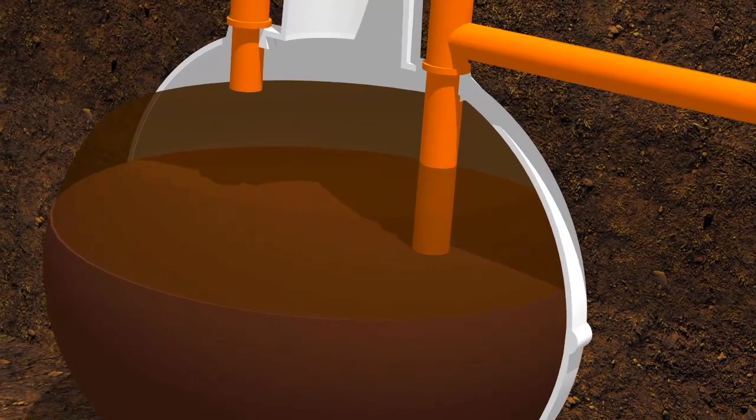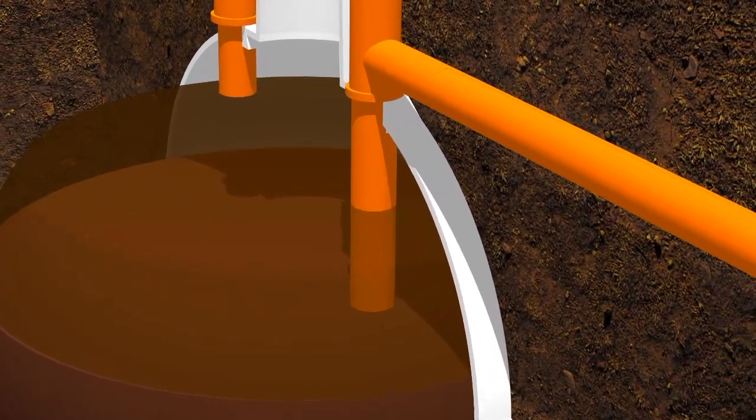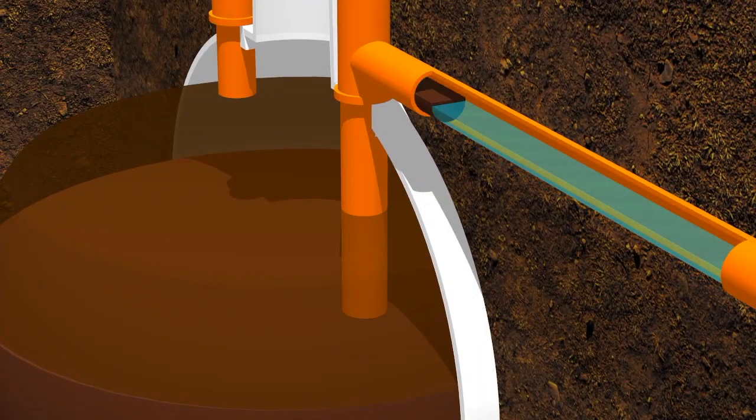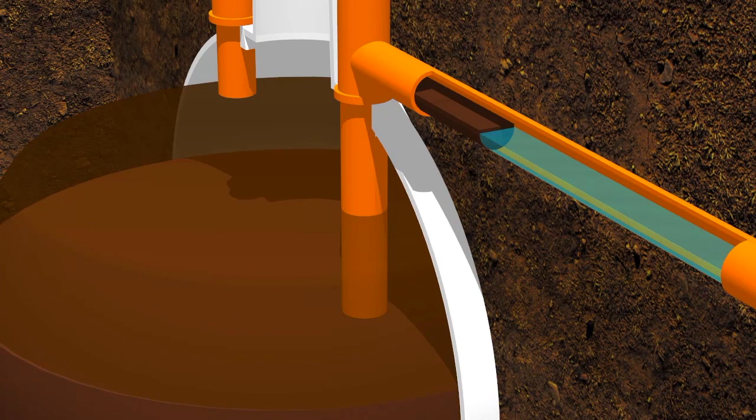From there, the fat and the grease and the sludge then starts to make its way through this outlet pipe and enters the pipe arteries that lead to the soakaway.